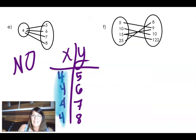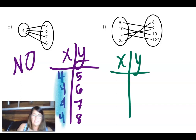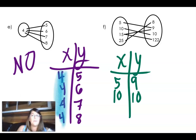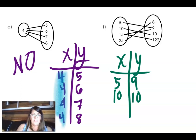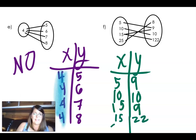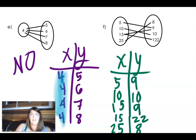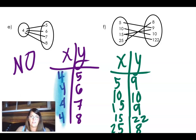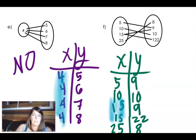Let's try this next one. Again, I get kind of confused when I look at this. So I think whenever you have a mapping diagram, the easiest thing to do is to turn it into an XY chart. 5 goes with 9, 10 goes with 10. That's okay. It doesn't hurt anything. 15 goes with 9. And 15 goes with 22. And lastly, 25 goes with 8. Uh-oh, it's all about the X. See this X that repeats? That makes this a broken machine. Nope, it's not a function.